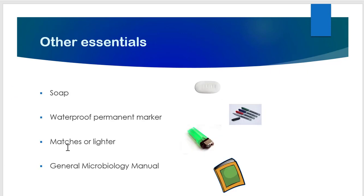Other essentials include waterproof permanent markers, matches or a lighter, and a general microbiology manual. I hope you now have a thorough and in-depth knowledge of the general purpose items needed in your day-to-day microbiology lab. Thank you so much.